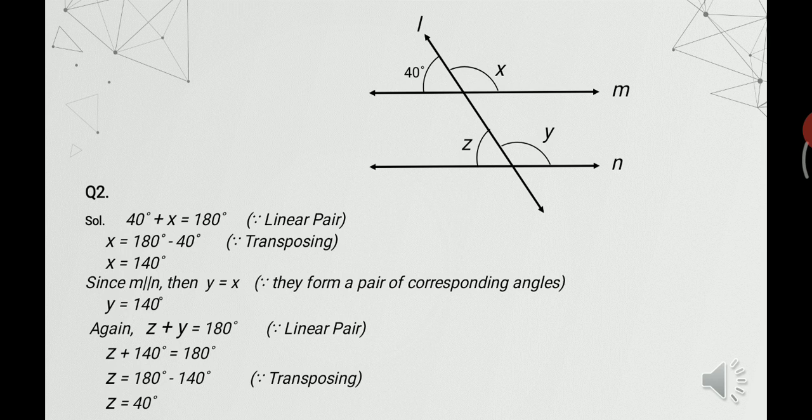Exercise 9.2, question number 2. We have to find the angles represented by the variables x, y and z, using the given angle of 40 degrees. On line M, the 40-degree angle and x form a linear pair, and the sum of a linear pair is always 180 degrees. So 40 plus x equals 180 degrees, giving x equals 140 degrees. Since angle x and angle y form a pair of corresponding angles — x is in the exterior and y is in the interior on the same side of the transversal — and the lines are parallel, y equals x equals 140 degrees.